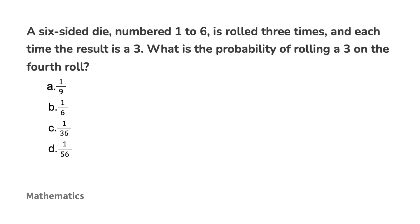A six-sided die numbered 1 through 6 is rolled three times, and each time the result is a 3. What is the probability of rolling a 3 on the fourth roll? Pause the video, check your understanding and ability to answer, and come back for the solution.